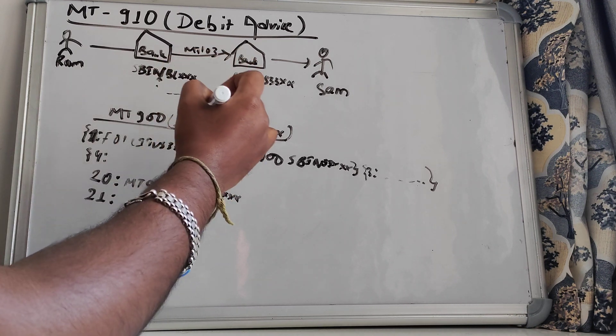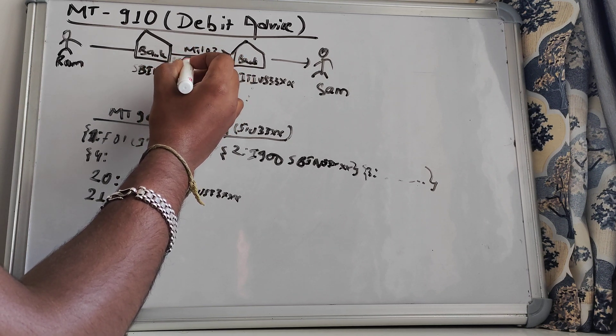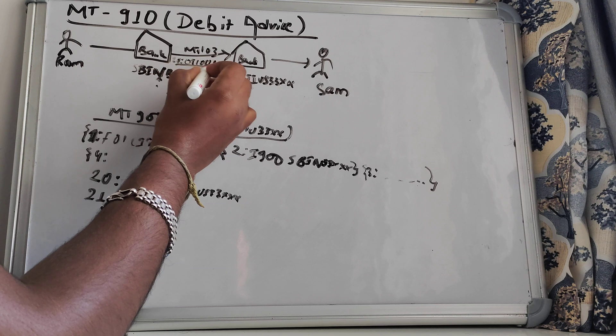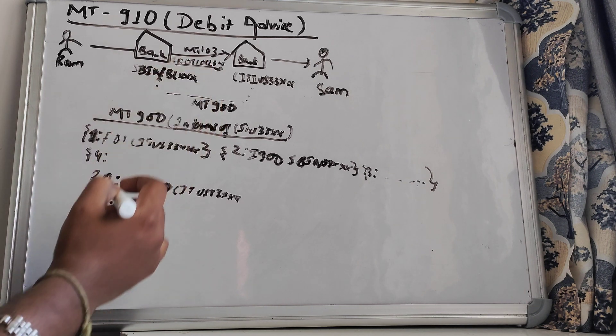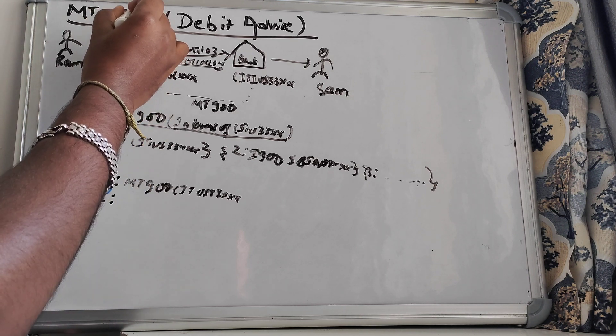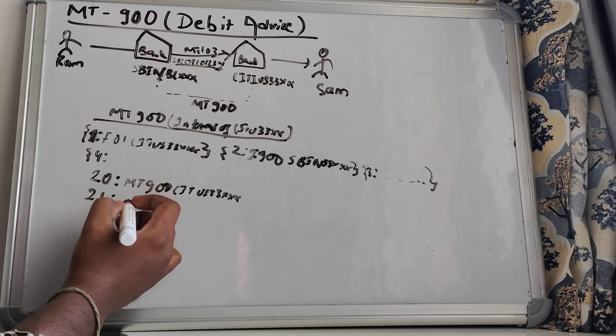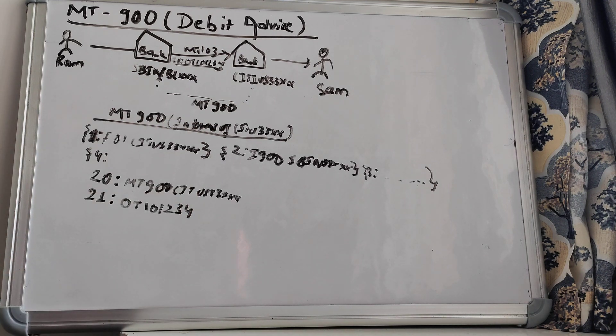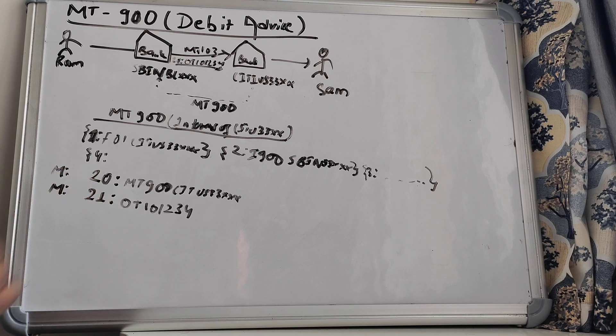Let's say originally when the bank SBIN BL 33XXX had sent MT-103 message to bank City US, it has sent in tag 20 something like OT-101234. So this is what it has sent originally from SBIN bank to City US. So that transaction reference number would come into the related reference number of MT-900. So this reference number will be there - that is OT-101234. This transaction reference number will be there. So this is a mandatory tag.